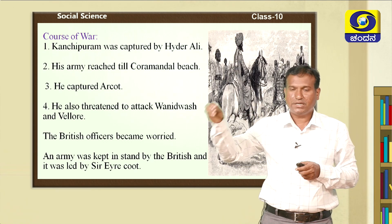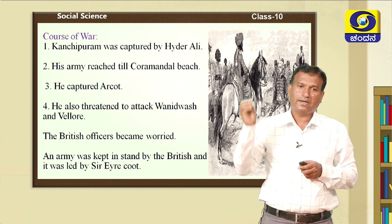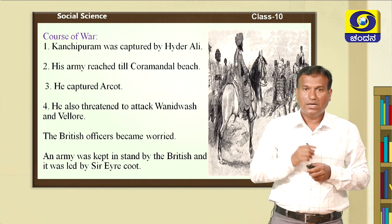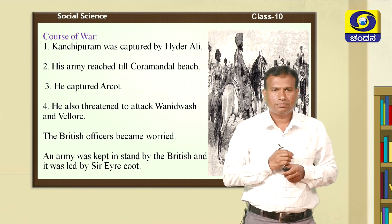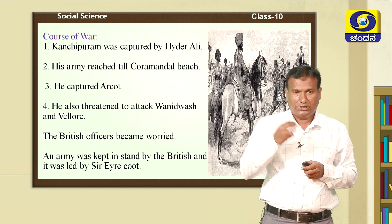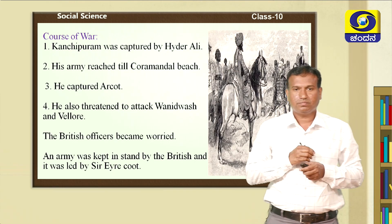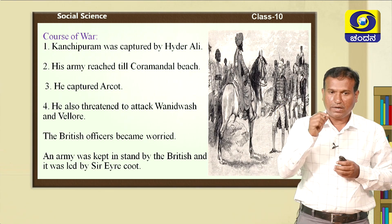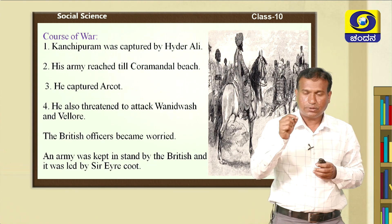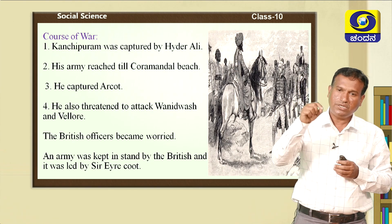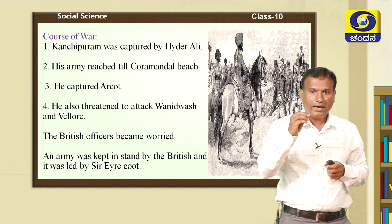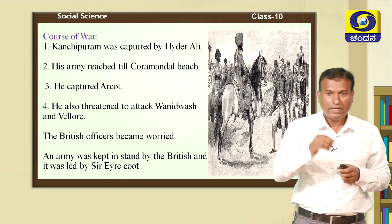After attacking the Coromandel coast and capturing Arkad, Haidrali gave a threatening call that he was going to capture Vandivash and Vellore. This showed how powerful Haidrali had become, which worried the British. The British army stationed at Mumbai was sent under the leadership of Sir Eyre Coote to attack Haidrali. In the battles that followed, Haidrali defeated the English in some battlefields and the English defeated Haidrali in others.